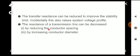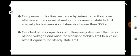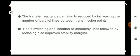The reactance of a transmission line can be decreased by reducing the conductor spacing or by increasing the conductor diameter. Compensation for line reactance by series capacitors is an effective and economical method of increasing stability limits, specifically for transmission lines more than 350 kilometers. Series capacitors will decrease the fluctuation of node voltages and raise the transmission stability limit to a value almost equal to the steady state limit.